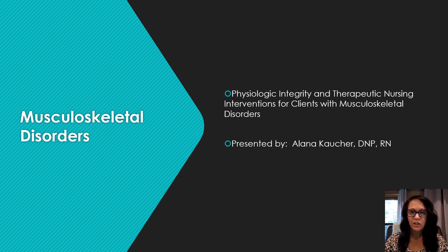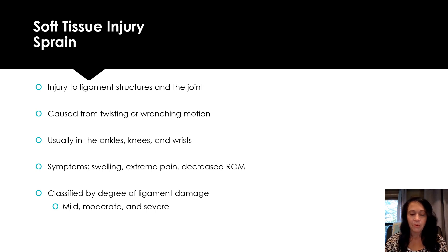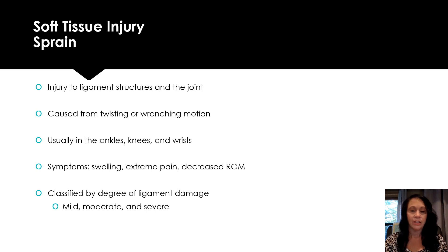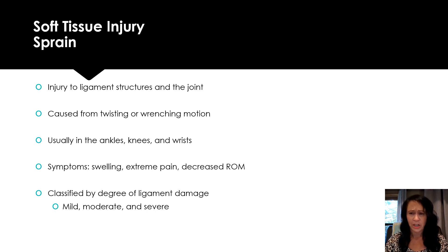We're going to talk about the physiologic integrity and therapeutic nursing interventions for our clients with advanced musculoskeletal disorders. As I go through this lecture, I'm going to tell you what type of injury we're talking about, give a description of that injury, and how we treat it. I think it's easier to understand if I do it that way.